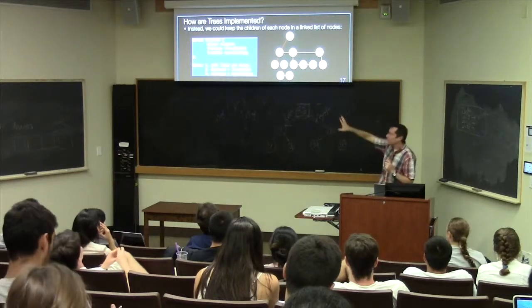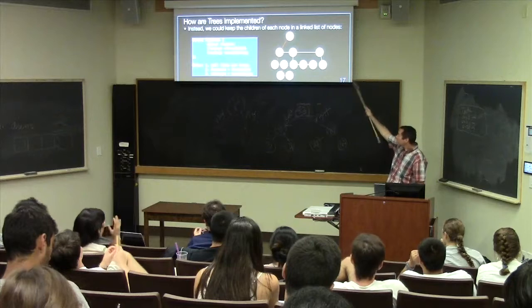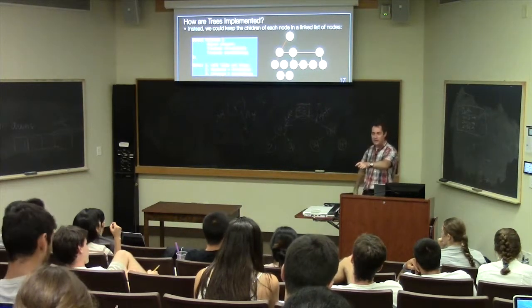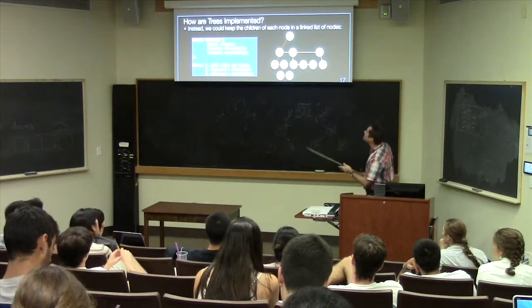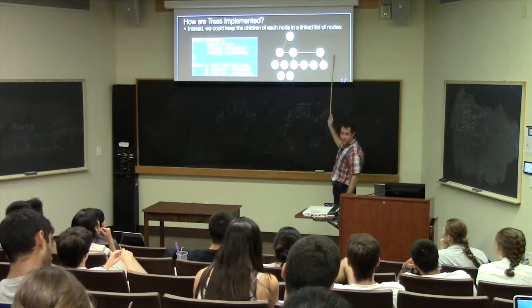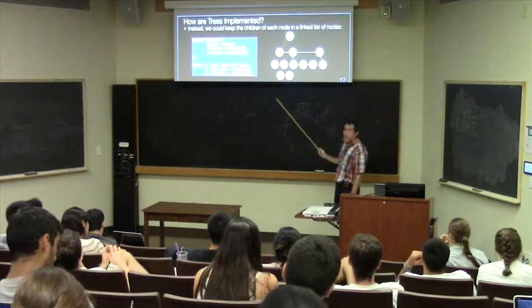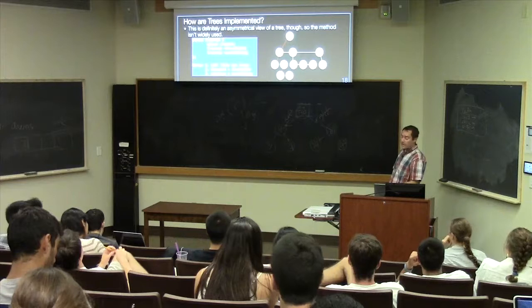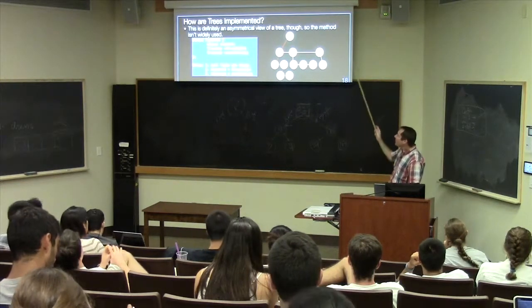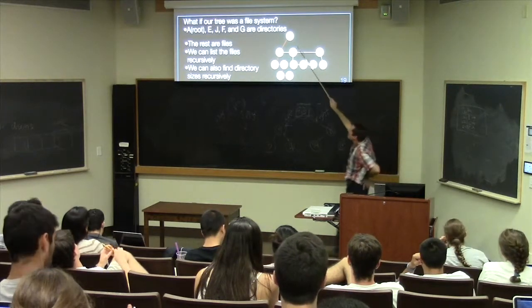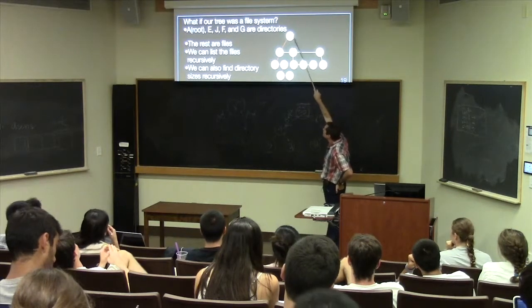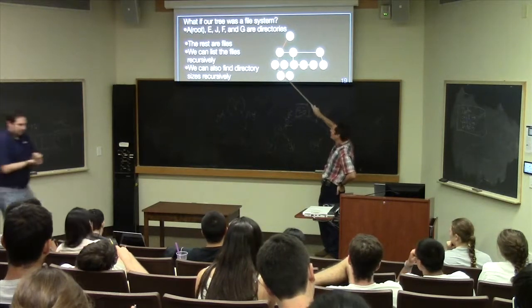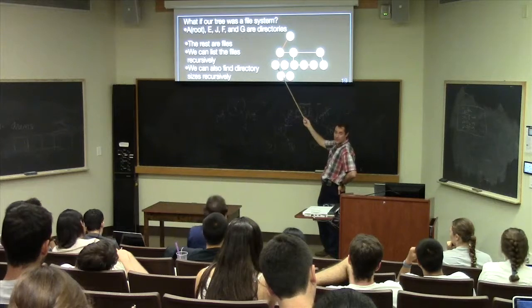This first-child/next-sibling model lets us represent a file system. If A is a directory with first child E, and E is also a directory with children I and J — since I has no children, it's a file. A's next sibling is null since it's the root. G's next sibling is null. Anyone without children has first child set to null. This method is not widely used, but it's a clean way to handle n-ary trees using only node-to-node connections.